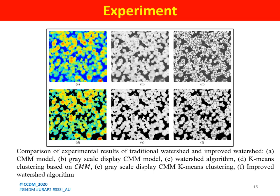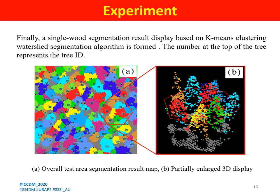The K-means watershed algorithm proposed in this article is compared with the traditional watershed algorithm. Picture A is the CHM model; picture B is the grayscale display of the CHM model; picture C is the traditional watershed algorithm result; picture D is K-means clustering based on the CHM model; picture E is the grayscale display of CHM K-means clustering; and picture F is the improved watershed algorithm result. Finally, a single-tree segmentation result display based on the K-means clustering watershed segmentation algorithm is shown, where the number at the top of the tree represents the tree ID.